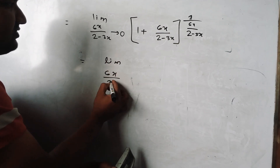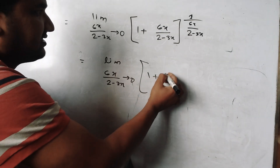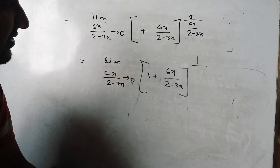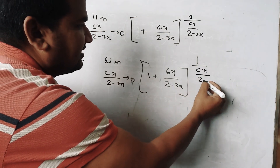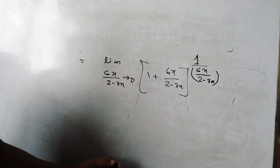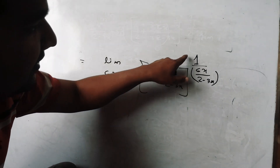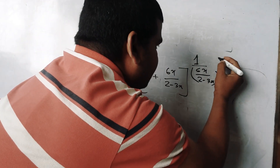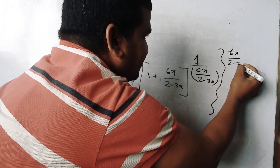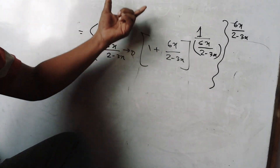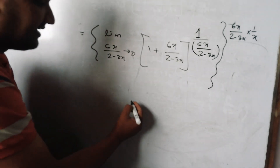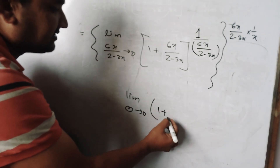Limit of 6x by (2 minus 3x) as it tends to 0: we write 1 plus 6x by (2 minus 3x) to the power (2 minus 3x) over 6x, then raise to the power 6x by (2 minus 3x). We already have power one upon x, so the other factor is one upon x.